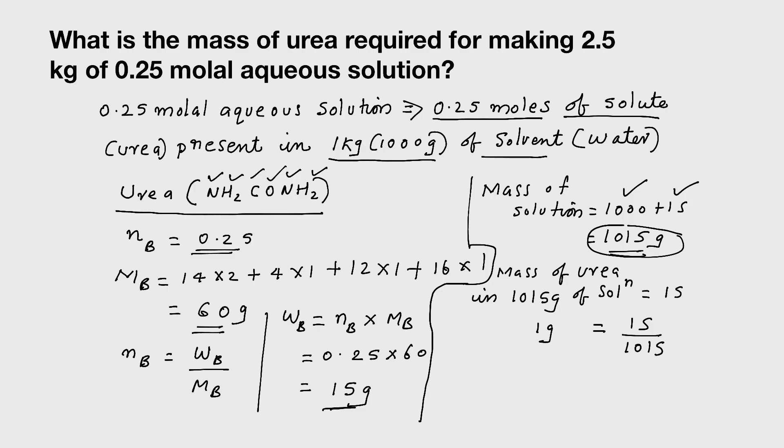Now what is the question? You are supposed to find the mass of urea for making 2.5 kg. 2.5 kg means how much gram? 2500 gram. So what do you have to find? Mass of urea in 2500 gram of solution. How to calculate? 15 by 1015 into 2500. On calculating, you will be getting 36.9, approximately 37. Hope you understand, 37 gram.